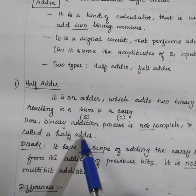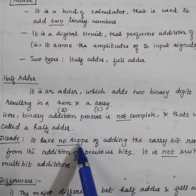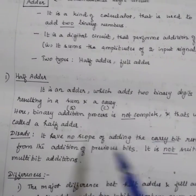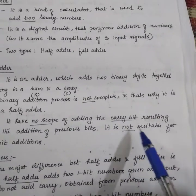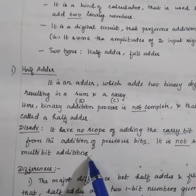Its disadvantage is it has no scope of adding the carry bits resulting from the addition of previous bits. It is not suitable for multi-bit addition. Only simple addition can be made using half adder.